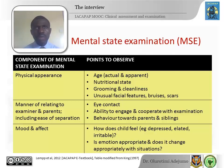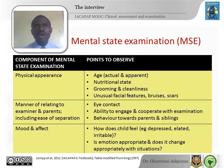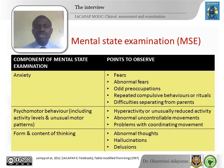Observe how the child relates to you, to their siblings, to the parents, and to anyone they came with. How easy is it for the child to separate from the parents? What is the child's mood — if you ask the child how they feel, what do they say, and does your observation match? Does their mood change appropriately during the course of the interview? When talking about things the child finds amusing, does the child light up, or does the mood remain flat throughout? Does the child express anxieties appropriate for age, such as fear of the dark in a preschool child?